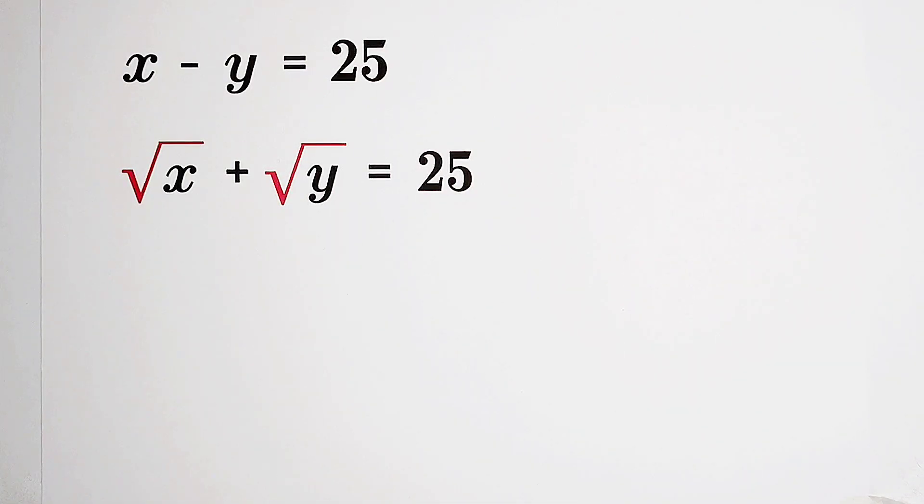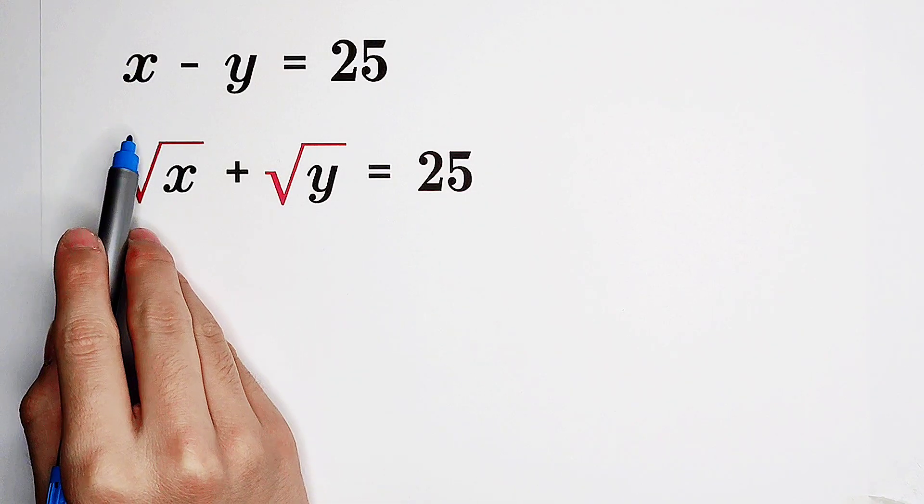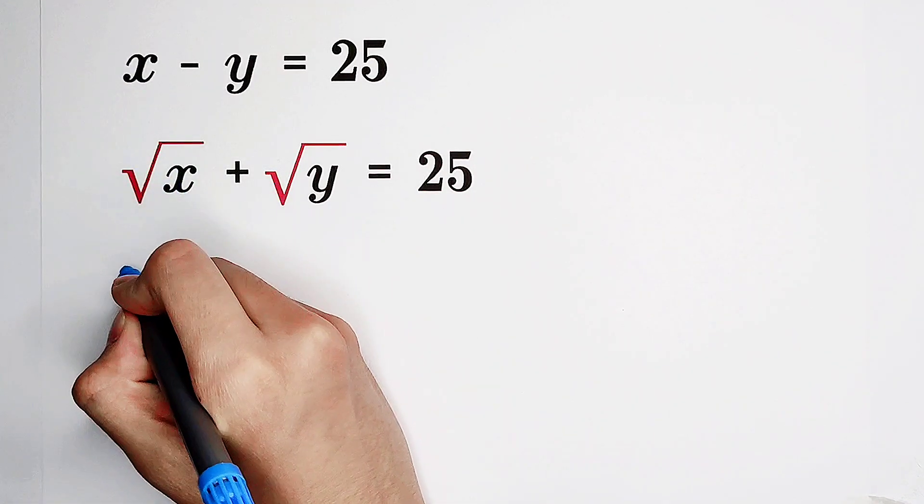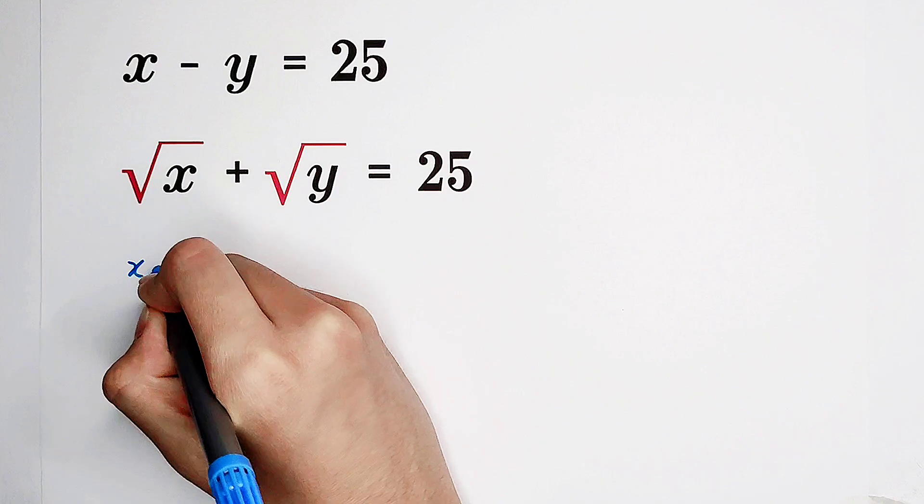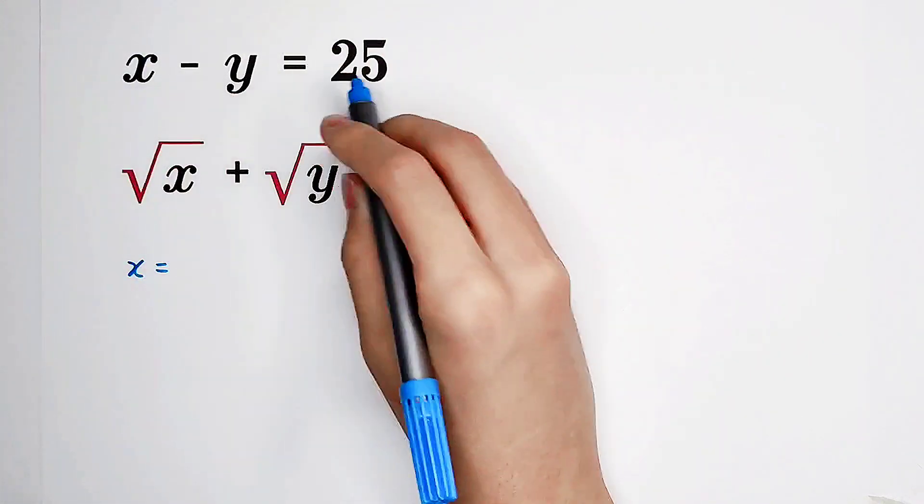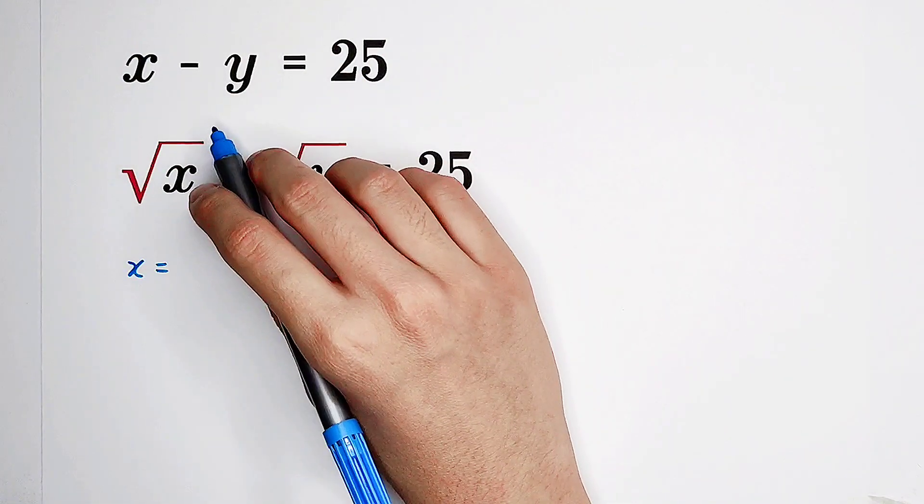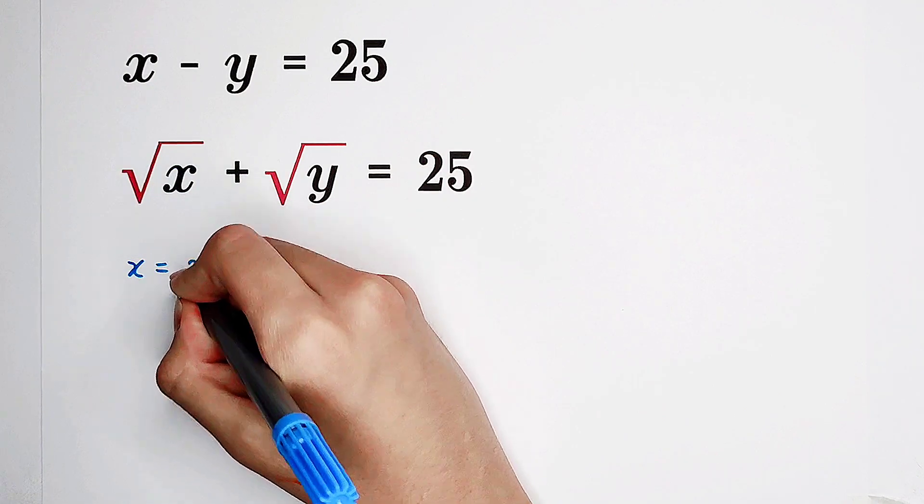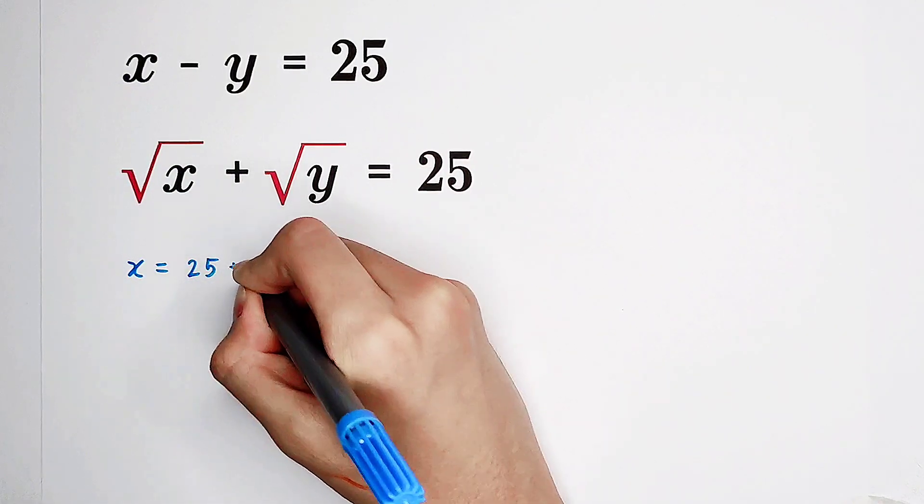Firstly, I am willing to express x in terms of y. So, from the first equation, we can add y to both sides, and x is 25 plus y.